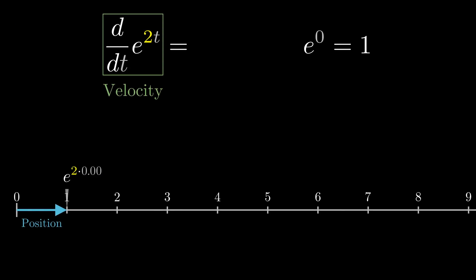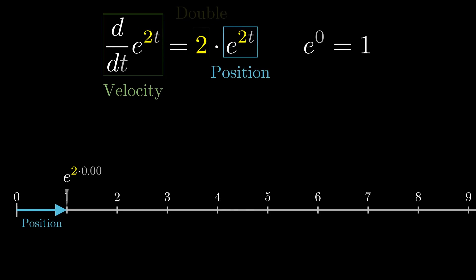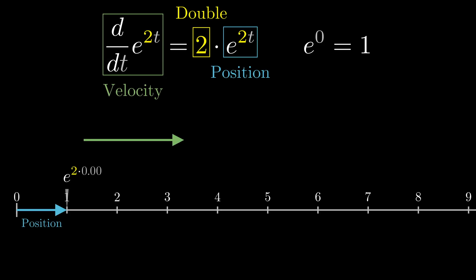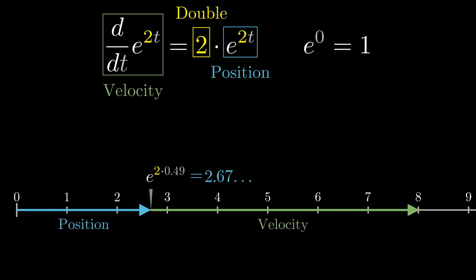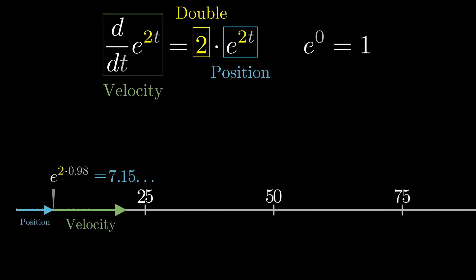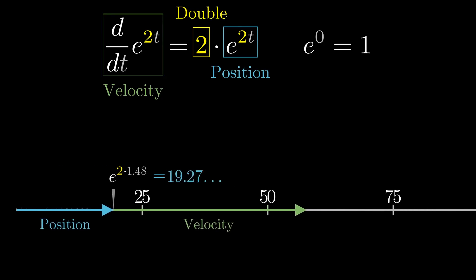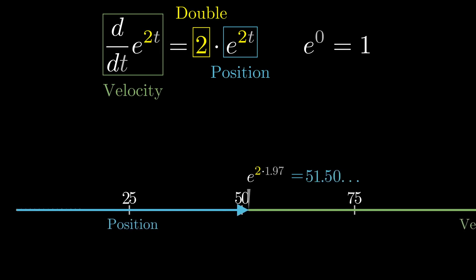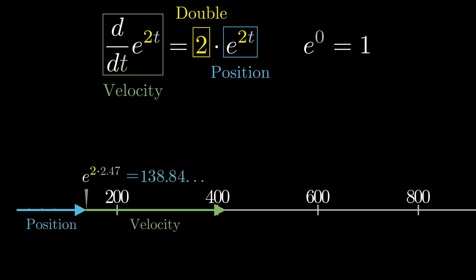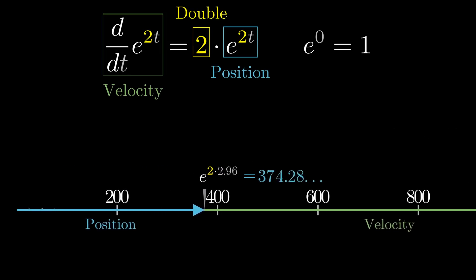And if you add a constant to that exponent, like e to the 2 times t, the chain rule tells us that the derivative is now 2 times itself. So at every point on the number line, rather than attaching a vector corresponding to the number itself, first double the magnitude of the position, then attach it. Moving so that your position is always e to the 2t is the same thing as moving in such a way that your velocity is always twice your position. The implication is that our runaway growth feels all the more out of control.